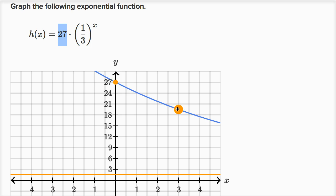Now let's graph another point. When x is equal to one, what is h of x? It's going to be one third to the first power, which is just one third, so one third times 27 is nine. When x is one, h of one is nine.